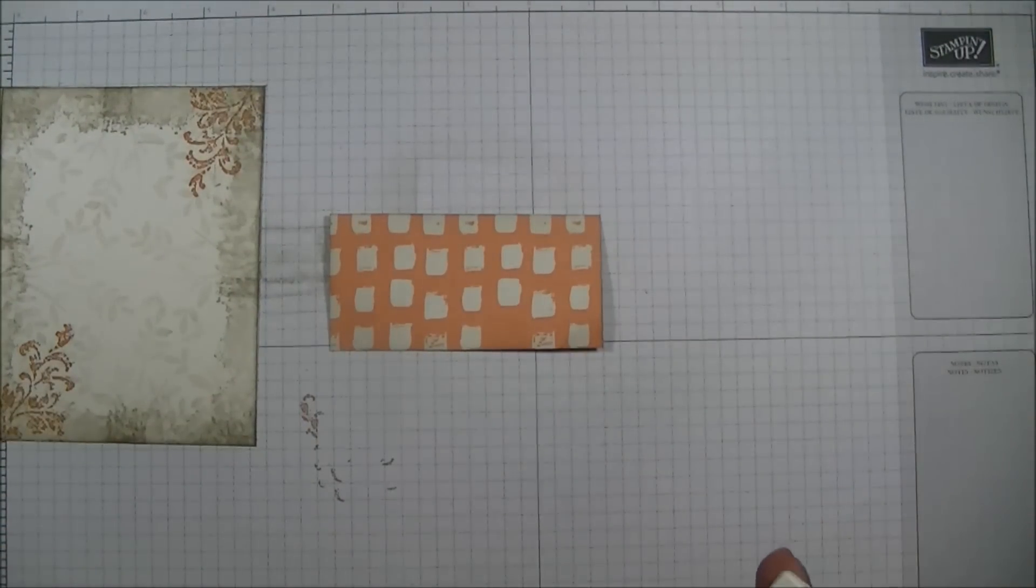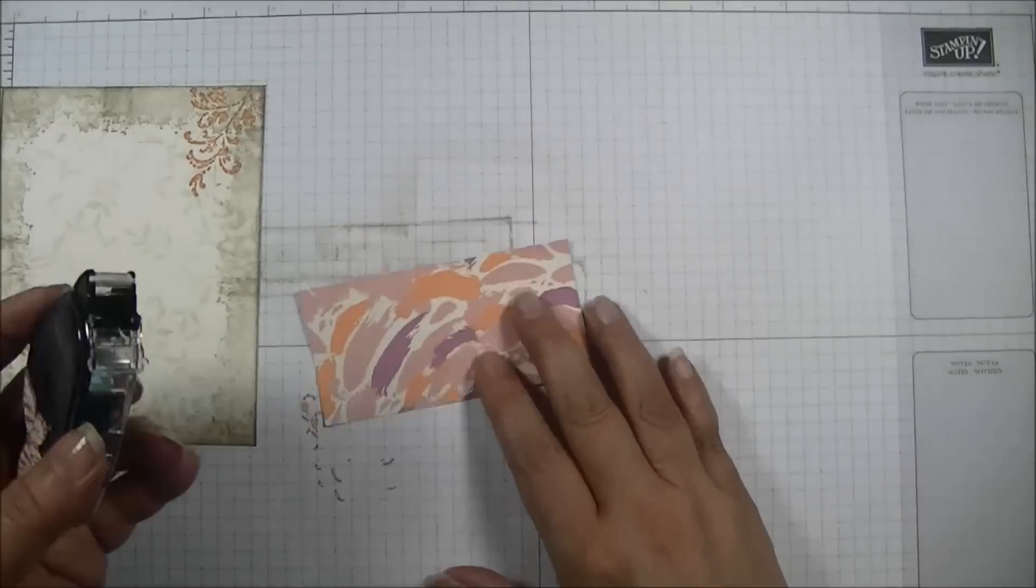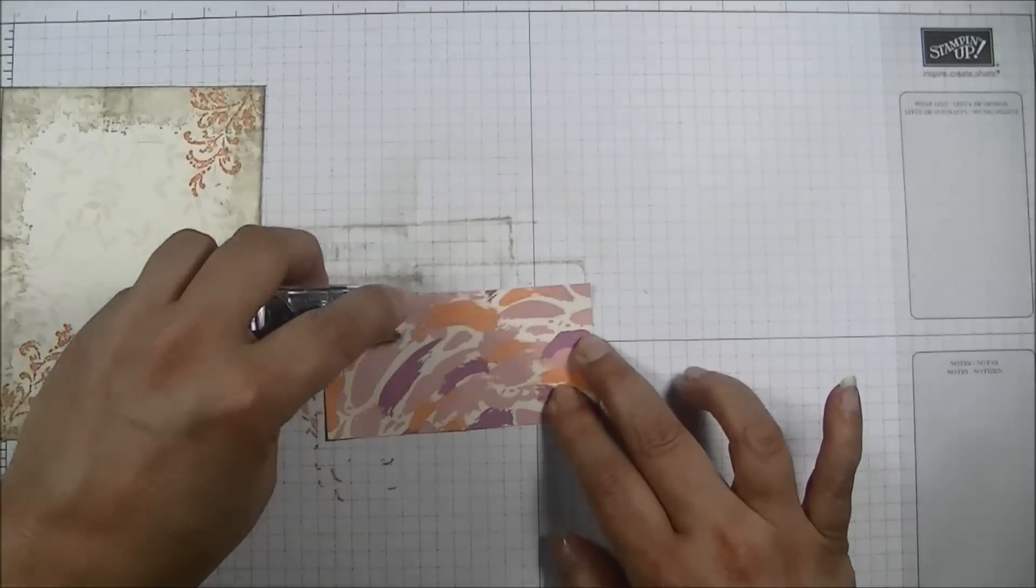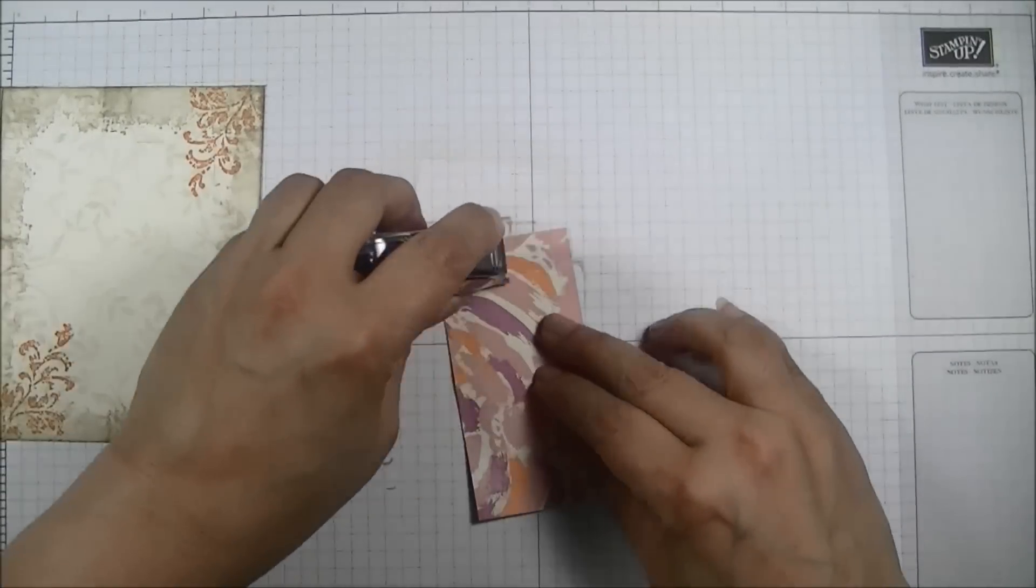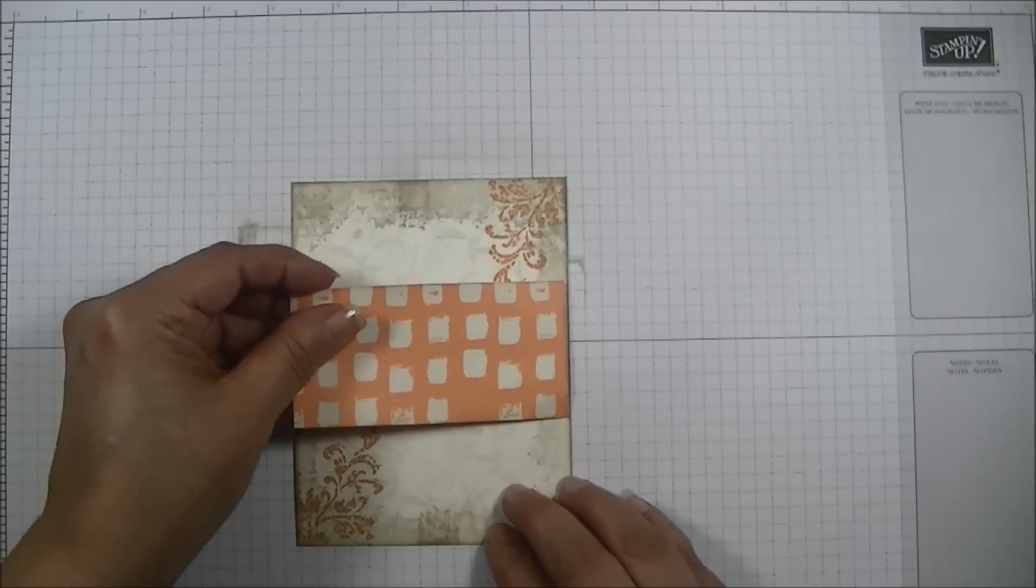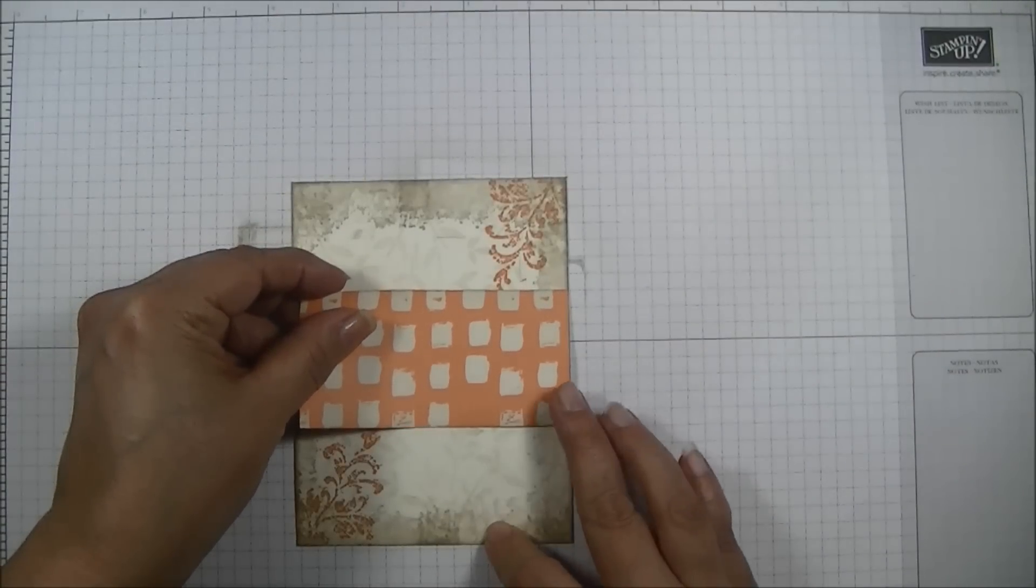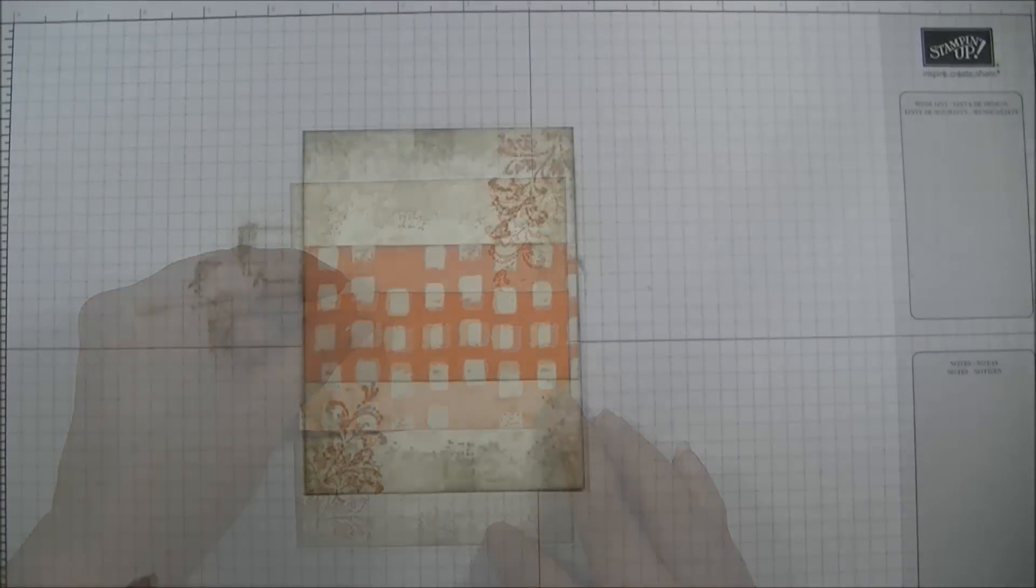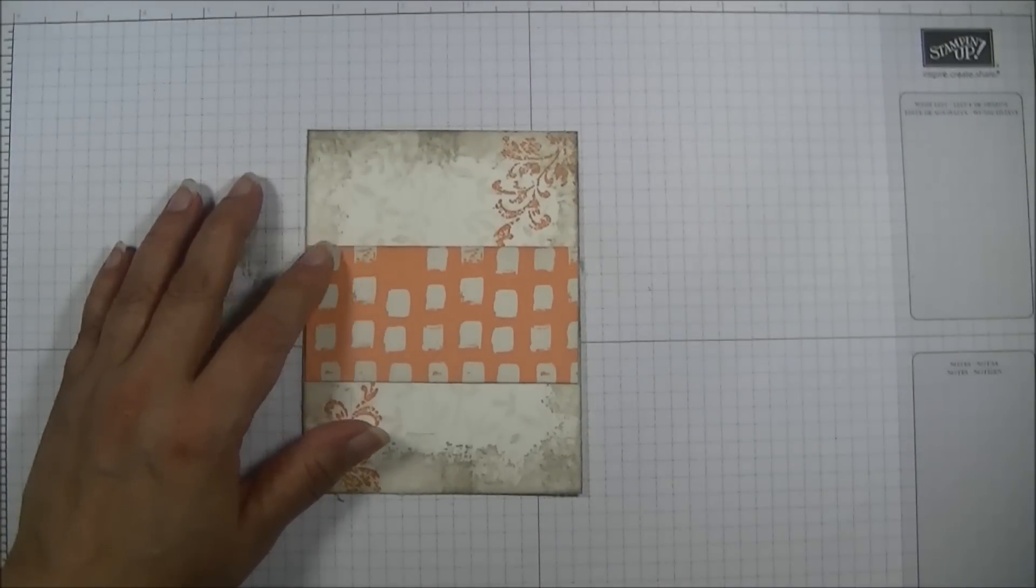The next step is to grab my designer series paper, Sahara Sand and my sponge and then I am going to work at sponging my edges. Sahara Sand is not a really dark color so it adds some subtle distressing to the edge of this paper. It is just enough to make a difference in your project. It takes it from new to vintage in 30 seconds.